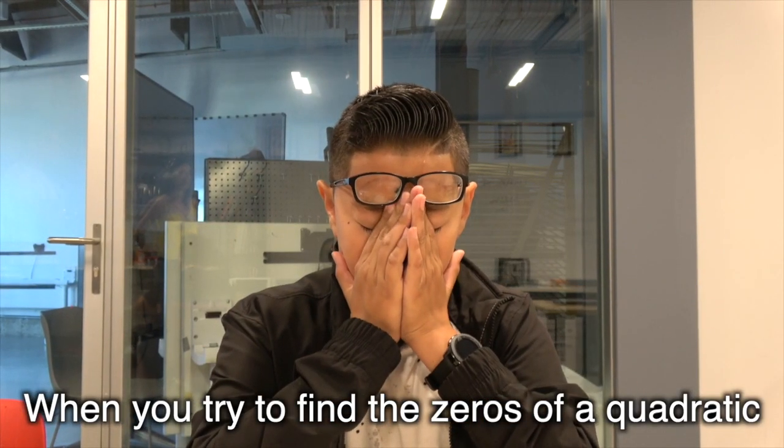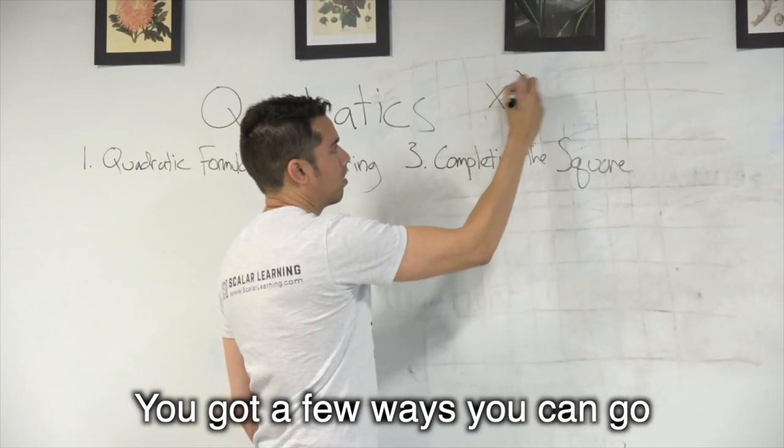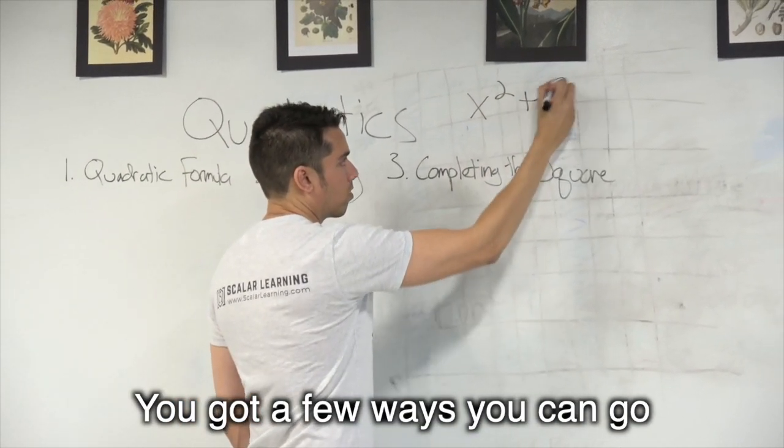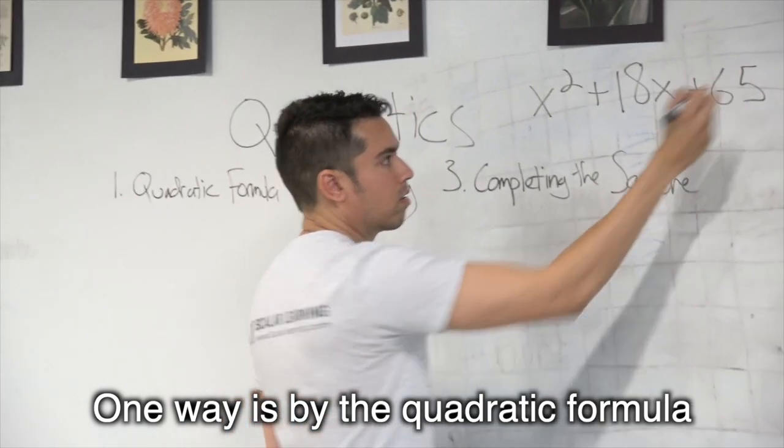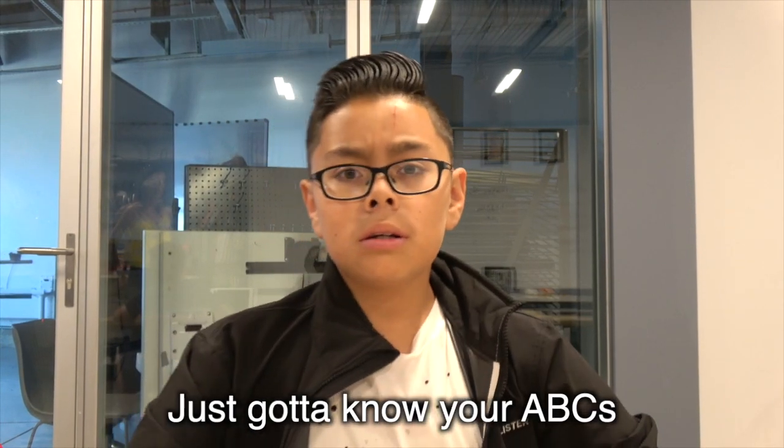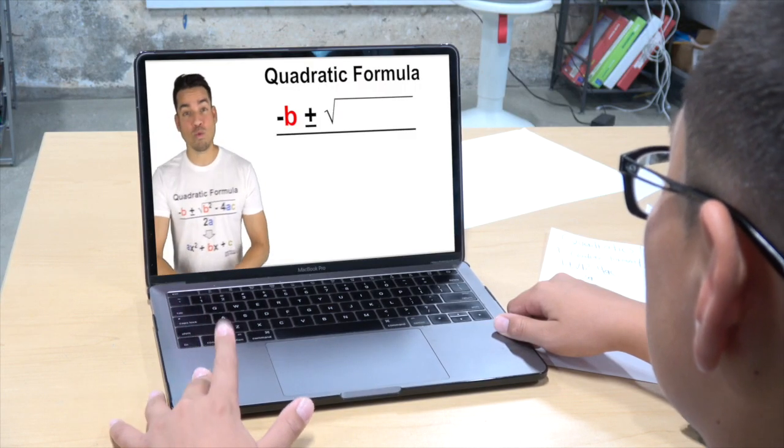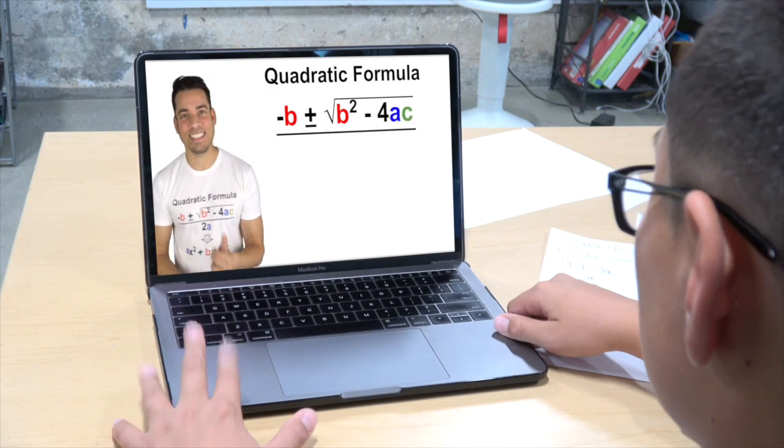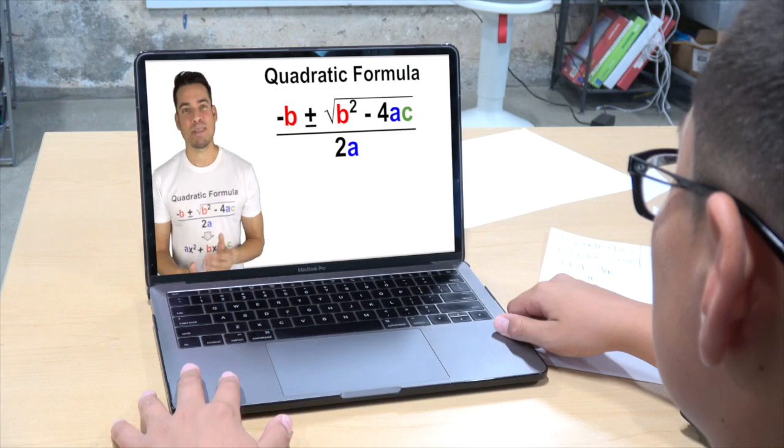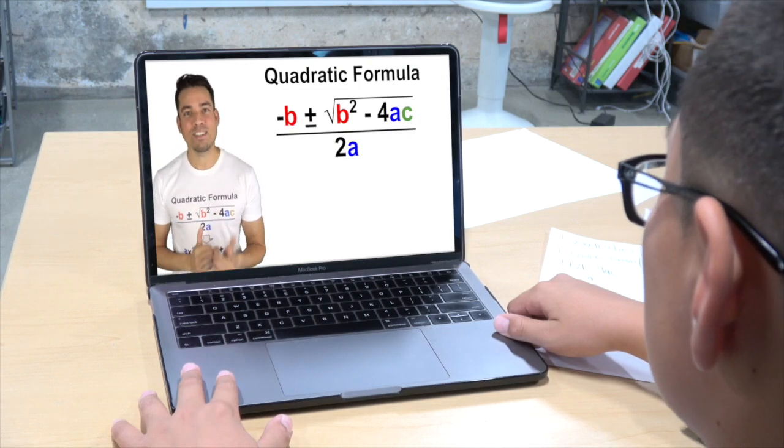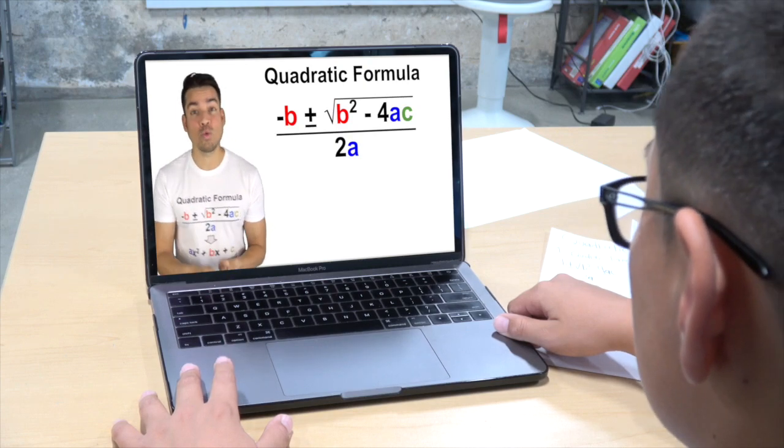When you try to find the zeroes of a quadratic, you got a few ways you can go. One way is by the quadratic formula. Just gotta know your ABCs: negative B plus or minus square root of B squared minus 4AC all over 2A.